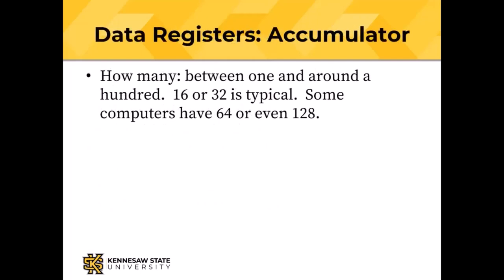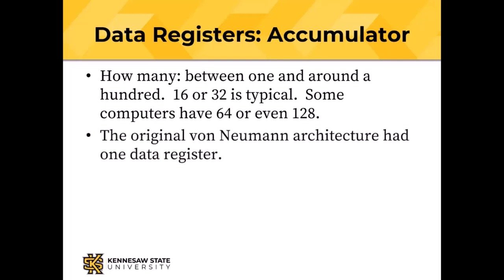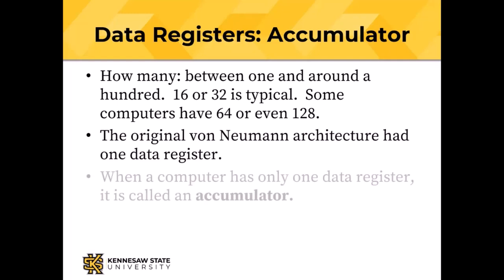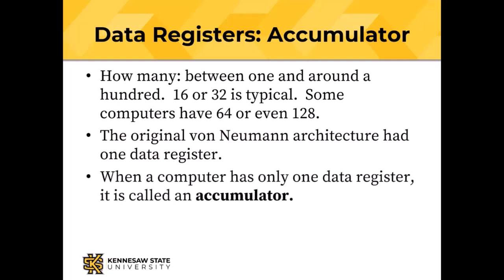Data registers or the accumulator are the registers that can receive the results of arithmetic and logic operations. Modern computers tend to have somewhere between 16 and 32 registers; RISC computers tend to have many more — 64 or even 128. The original von Neumann architecture had only one data register, and when there is only one it's called an accumulator.